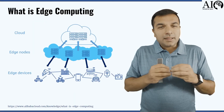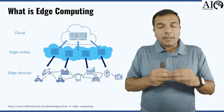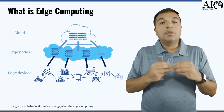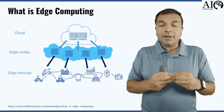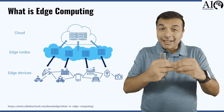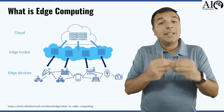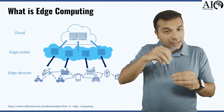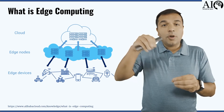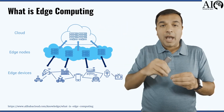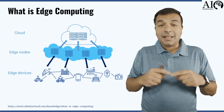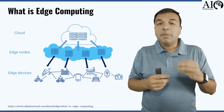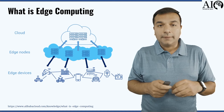Edge computing is defined as the computing — the actual CPU, the actual modules, the actual training of the models — everything is done right at the edge, right at the level of the device, rather than the data actually leaving the edge device, going all the way to the cloud and then coming back. A big portion of that is being done directly on the edge device.